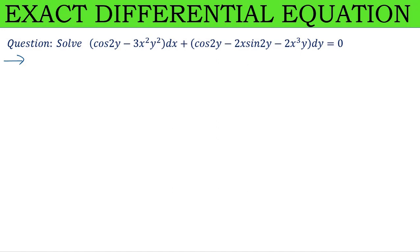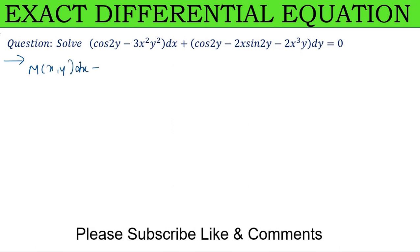Now solve (cos 2y - 3x²y²)dx + (cos 2y - 2x sin 2y - 2x³y)dy = 0. This forms M(x,y)dx + N(x,y)dy = 0.